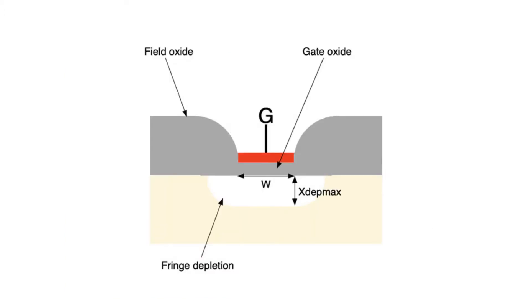Drain-induced barrier lowering is sometimes also called the short channel effect. Short channel effect is an umbrella term used and applied for a variety of effects that appear when channel length is small. Drain-induced barrier lowering is one such effect, but it's so dominant and so important that it is sometimes used synonymously with short channel effect.